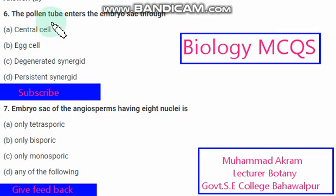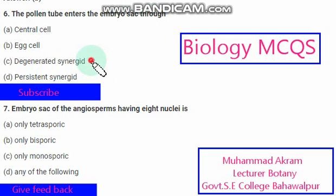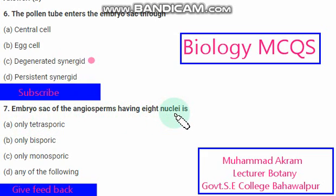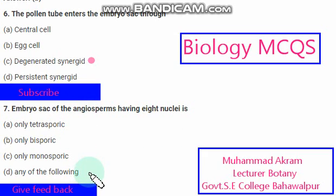The pollen tube enters the embryo sac through — the right option is option C. The embryo sac of angiosperms has eight nuclei — the right option is option D.